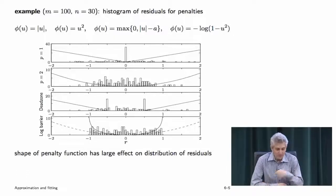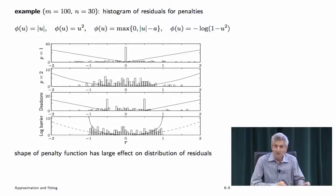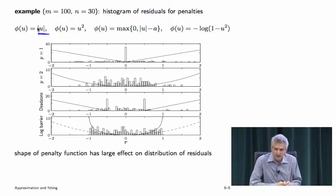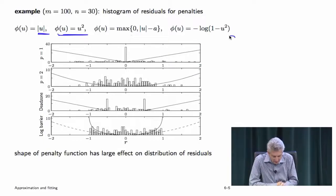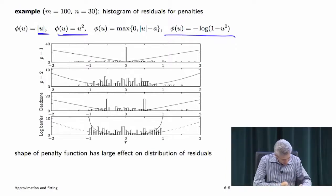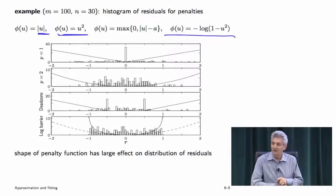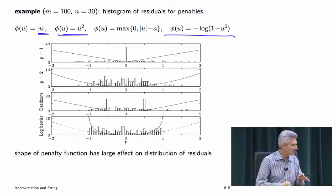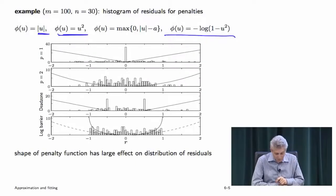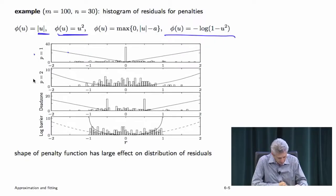Here's a simple example. We generate random data with 100 measurements and 30 parameters, then solve various problems: L1 norm, least squares, dead zone linear, and log barrier. Each penalty function is plotted showing your irritation at a given residual level, and the histogram of residuals is shown. Starting with least squares: you get a bunch clustered together, with a few larger ones but not extremely large.